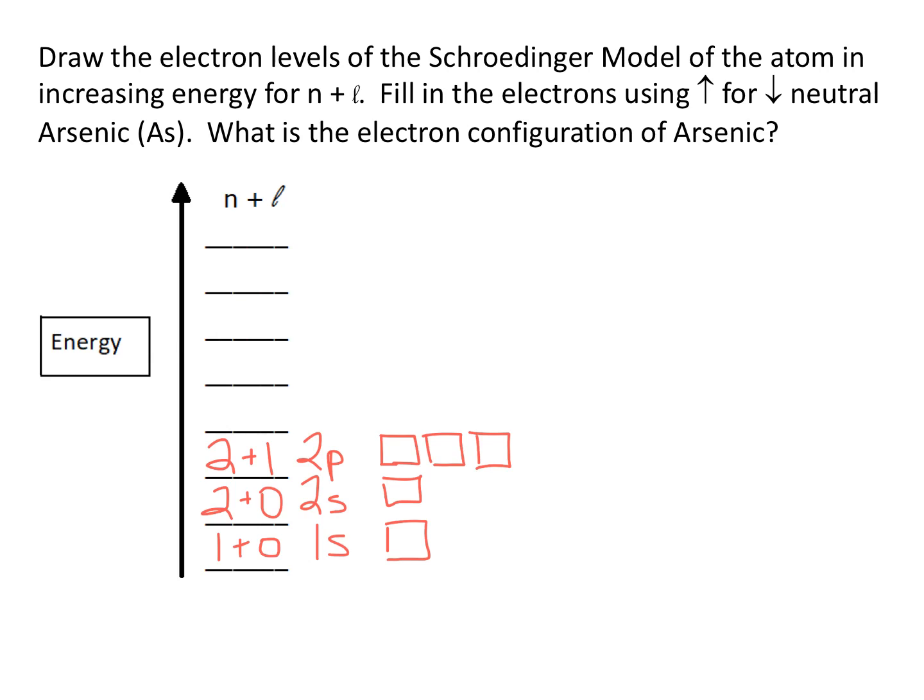When we go to the third principal quantum number, we have three possible levels. We have 3s, 3p, and 3d. But you may remember something unique about the closeness of the energy levels. It turns out that I'm going to erase this and move it up one. The 3d is actually slightly higher in level than the fourth principal quantum number, where L is 0, which is the 4s.